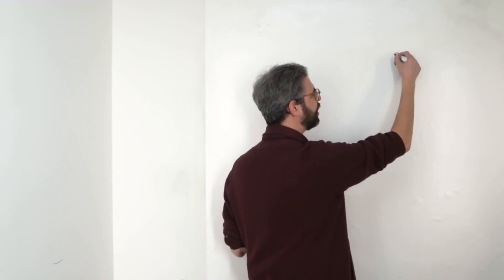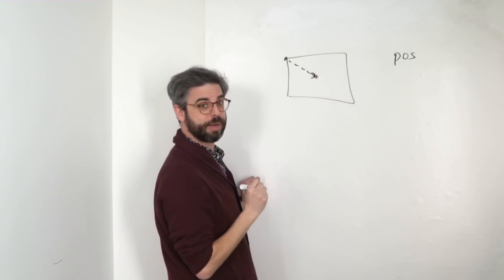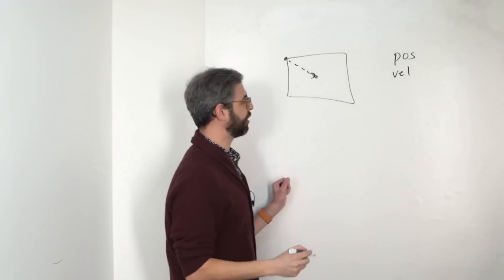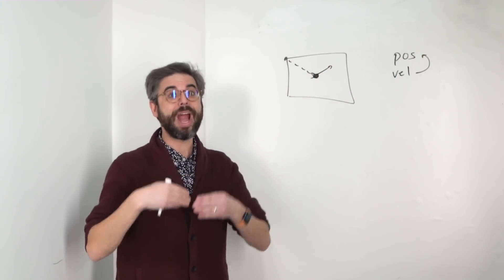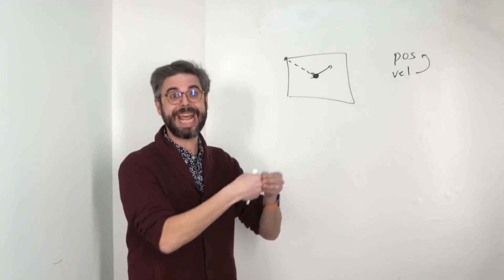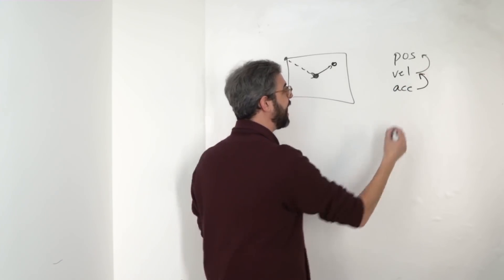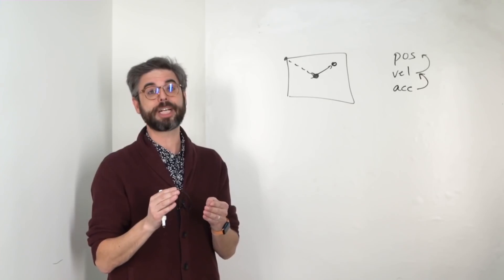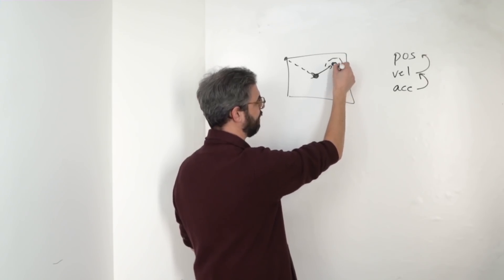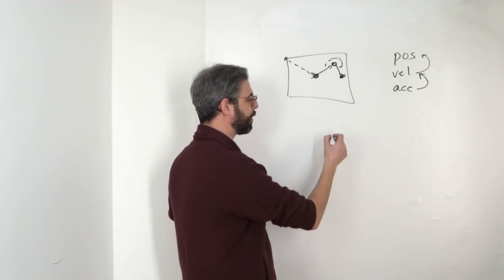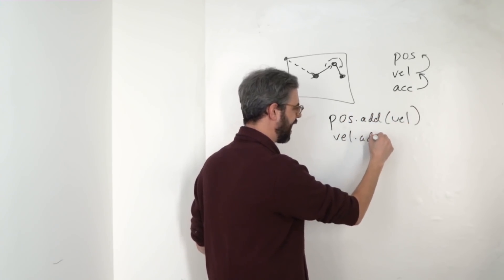There is a position vector — a position in a canvas relative to maybe the origin point. There is a velocity vector. The velocity vector, when applied to position, gives instructions for where the position should move to in the next unit of time. So velocity moves this dot from here to there. And then acceleration is the change in velocity — if the object is going to turn or slow down or speed up, that's an acceleration. This is represented as position dot add velocity, velocity dot add acceleration.